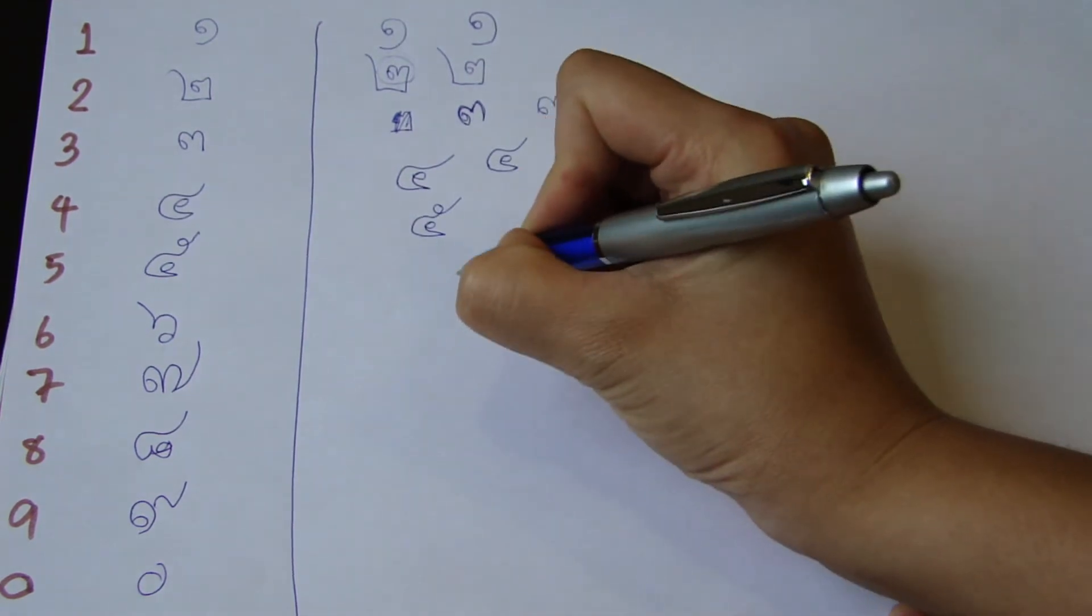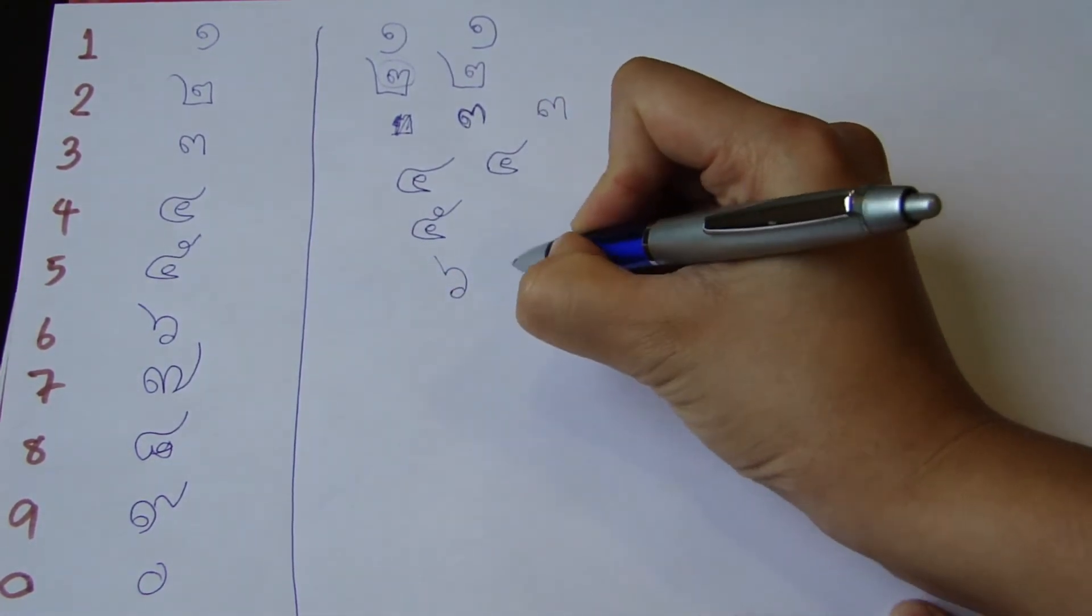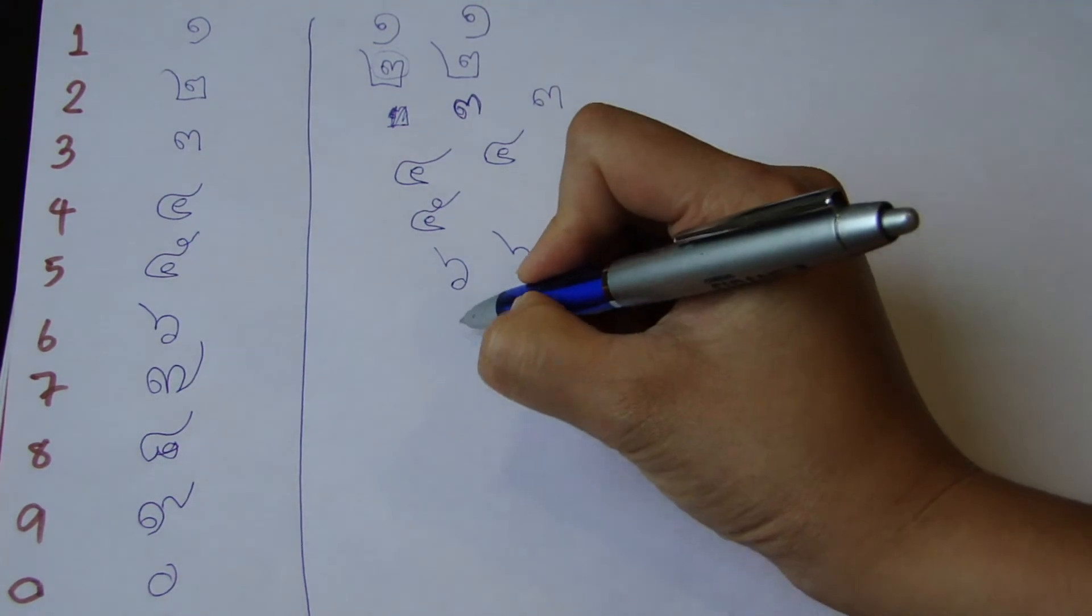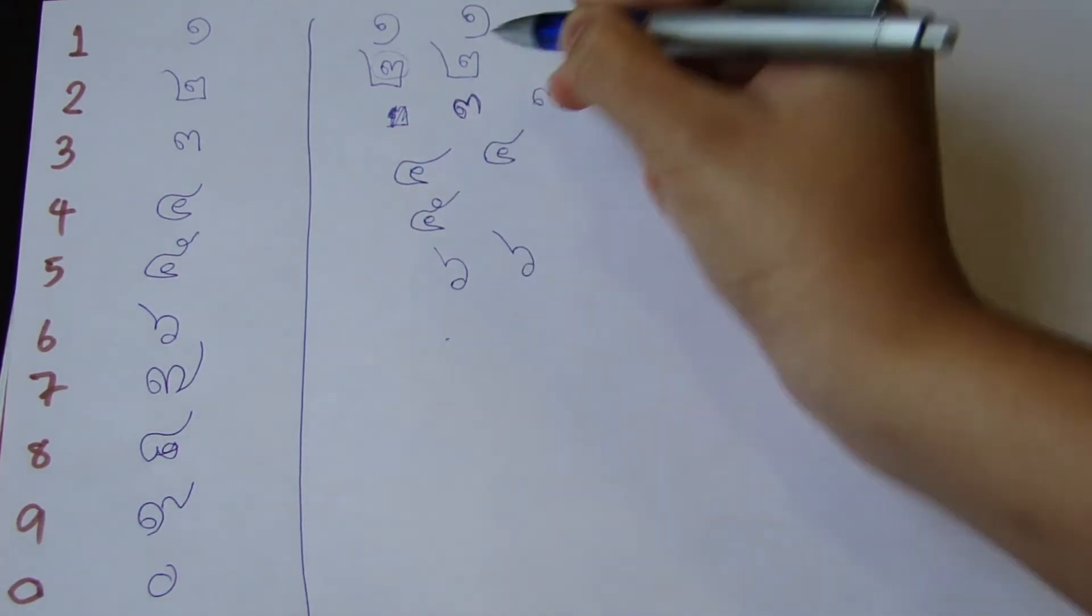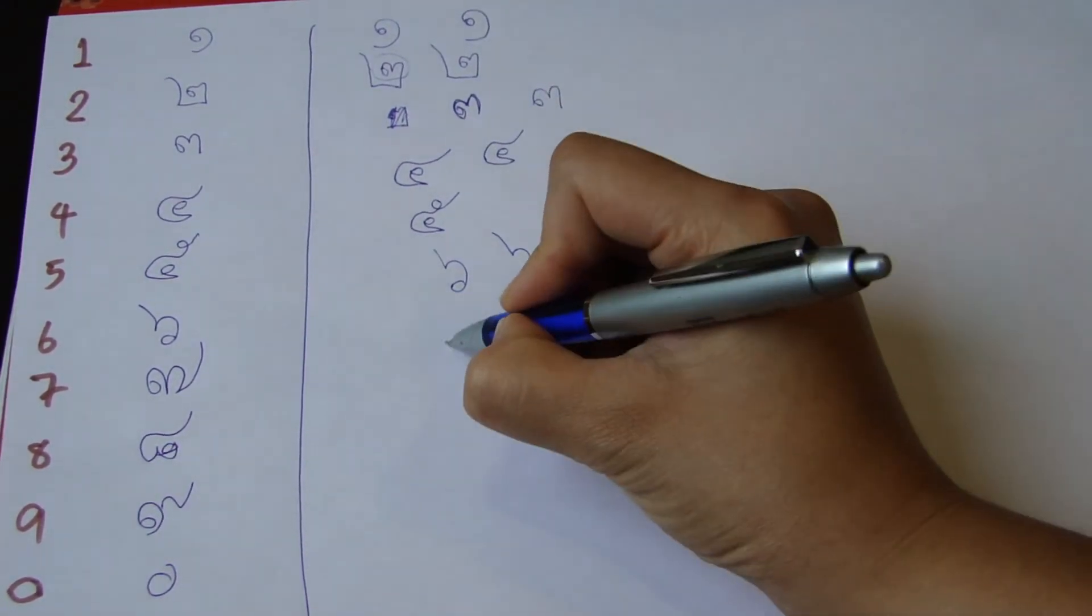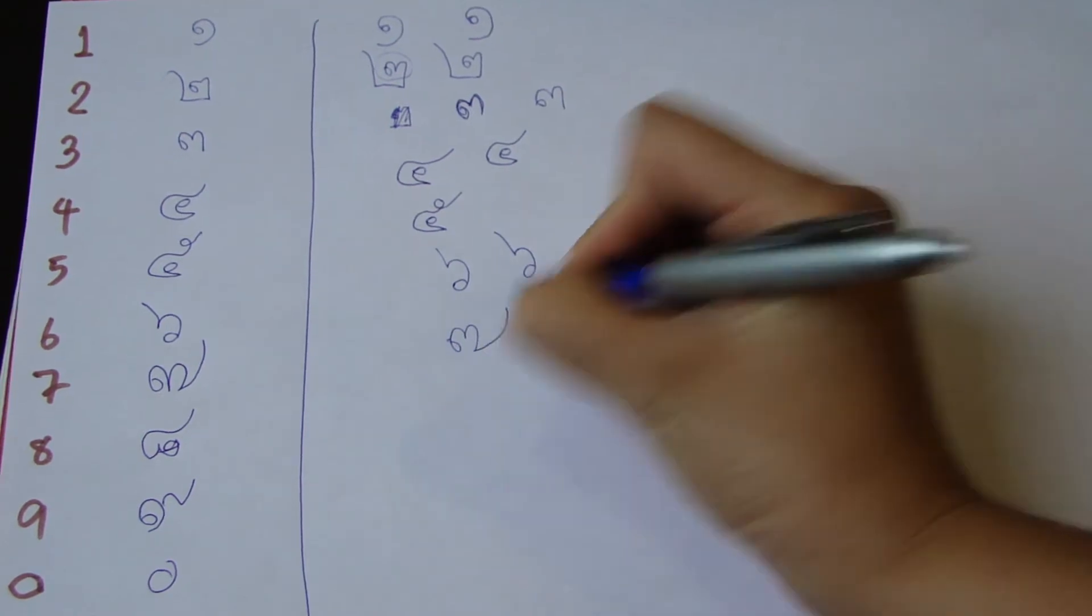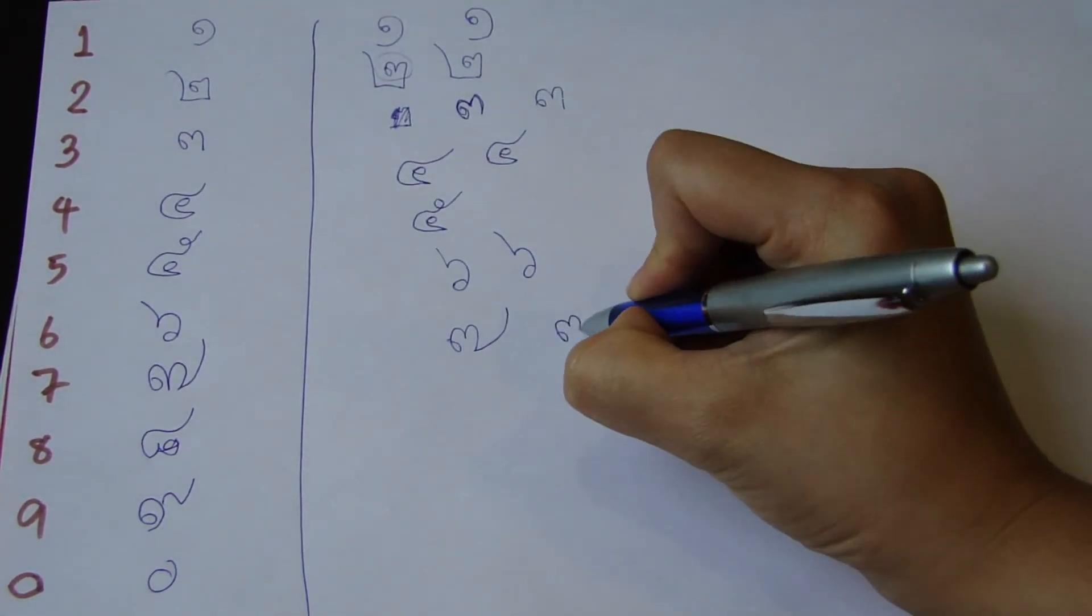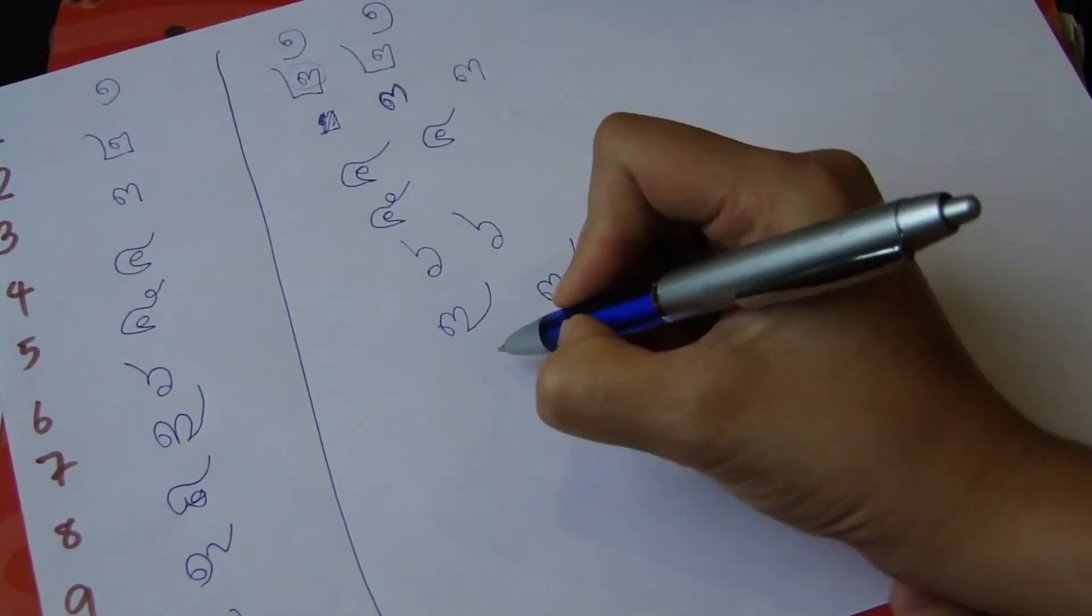Number 6. You can do like this, but I suggest you to do like this. That's okay, whatever. Number 7. It seems like number 3, with the tail. With the tail.